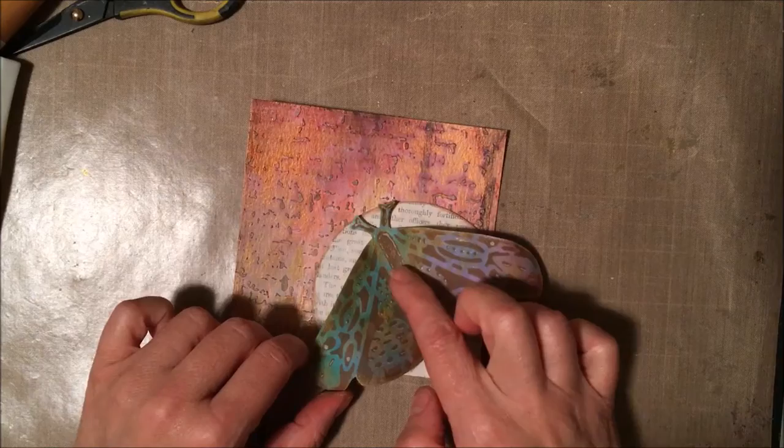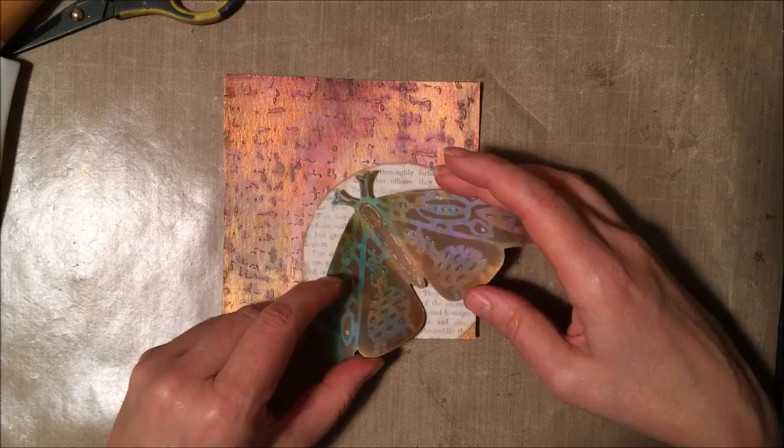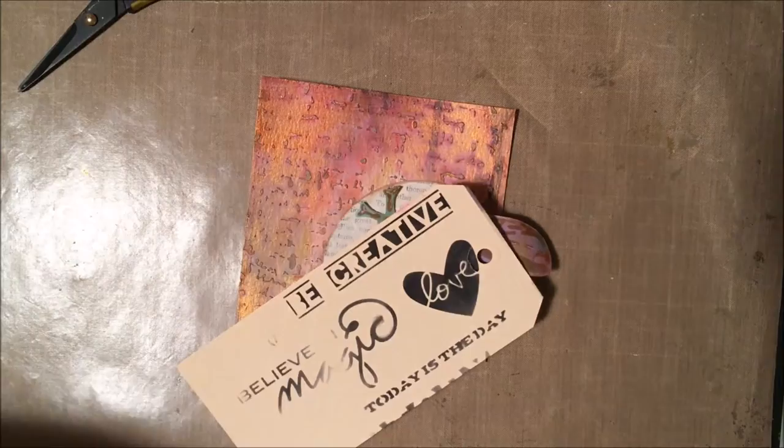All right. So we're pretty much ready to assemble. I'm very quickly drying. Not enough to make that Clearly for Art move at all. So I'm using a strong double-sided adhesive to attach that to my circle.